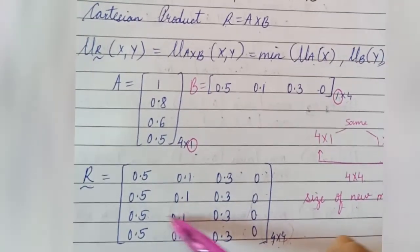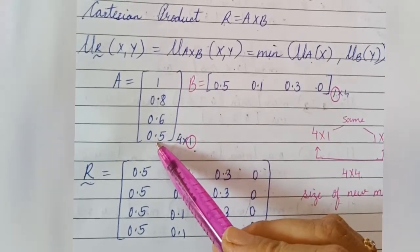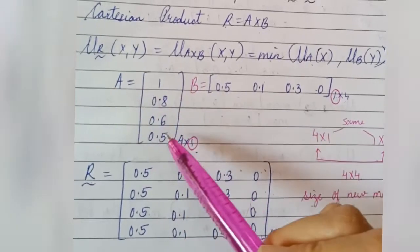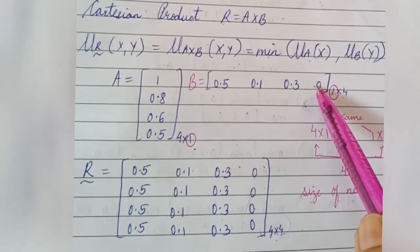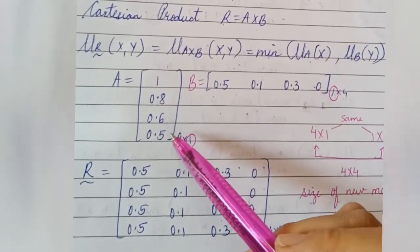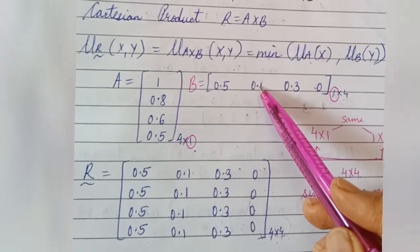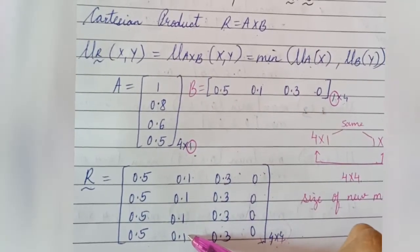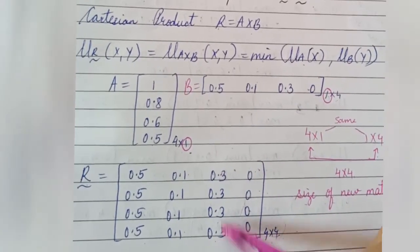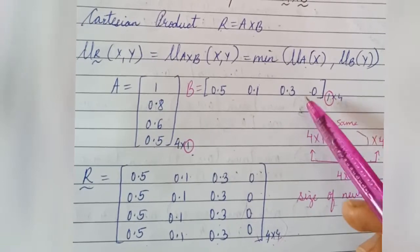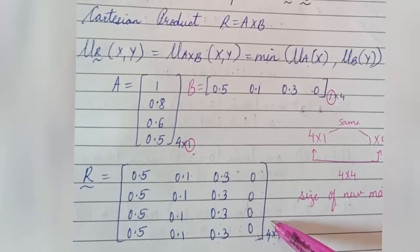For the fourth (last) row, select the last element of set A, which is 0.5, and compare it with each element of set B one by one, selecting the minimum. 0.5 and 0.5 → minimum is 0.5; 0.5 and 0.1 → minimum is 0.1; 0.5 and 0.3 → minimum is 0.3; 0.5 and 0 → minimum is 0. This is the fourth row of the matrix.